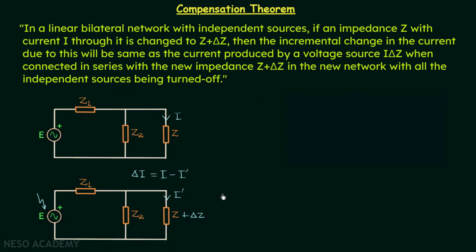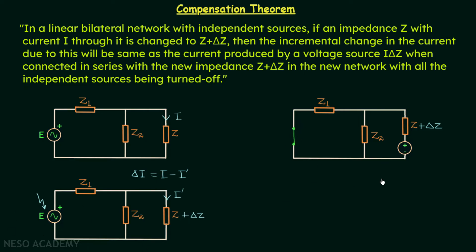I·delta Z is the increment in the voltage drop caused by incrementing Z to Z plus delta Z. As stated initially, the voltage drop across the impedance can be treated as a voltage source acting opposite to the main voltage source. It is obvious that the change in current will be due to this newly added extra voltage drop. Therefore, we turn off all other independent sources and keep only this voltage source equal to the drop. We short circuit E and introduce a voltage source of value I·delta Z, which produces the incremental current delta I in this branch.